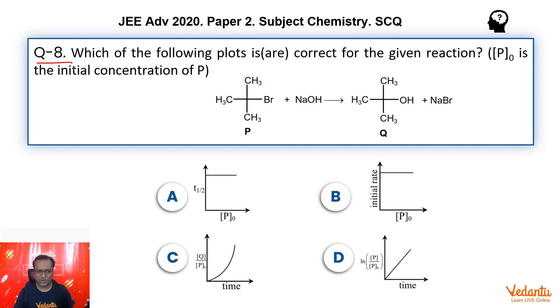Now, let's read the question first. It's an SCQ single correct type question. Which of the following plots is or are correct for the given reaction? P0 is the initial concentration of P. The reaction given to us is tertiary butyl bromide reacts with NaOH to give tertiary butanol and NaBr.